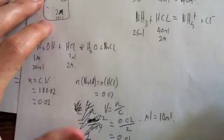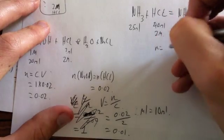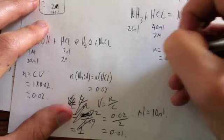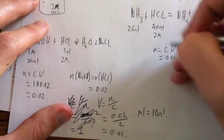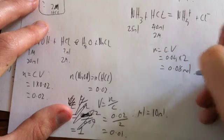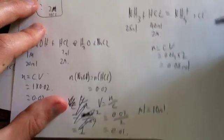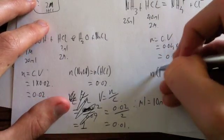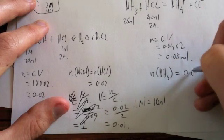We're going to have a very strong weak base here. Number of moles equals C times V equals 0.04, which is the volume, times concentration, which is 2, equals 0.08 mol. Because it's a 1 to 1 ratio, what we get is the number of moles of NH3 equals 0.08 mol.